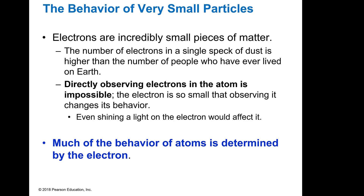Electrons are very small. The number of electrons in a single speck of dust is higher than the number of people who have ever lived on earth — that's how small they are. You can't look at them, because if you shine a light on them to see them, you're going to excite the electron, so it would be affected. The atom itself is described by the behavior of the electrons. It's kind of like when they look at the stars — they're inferring things because of how objects are moving or responding to stimulus.